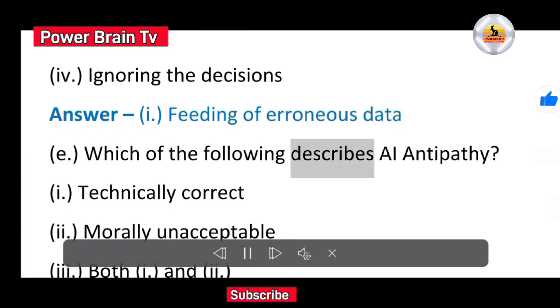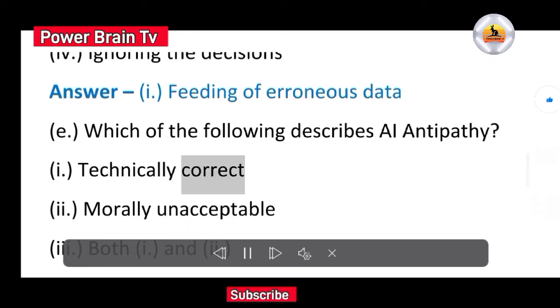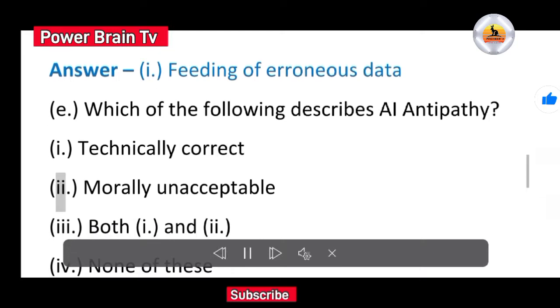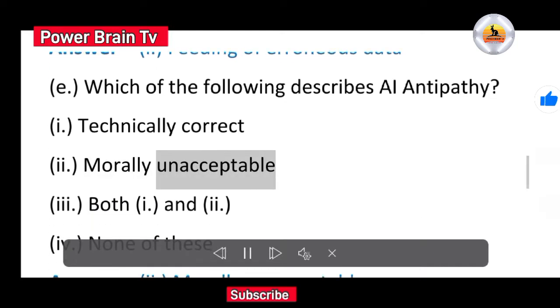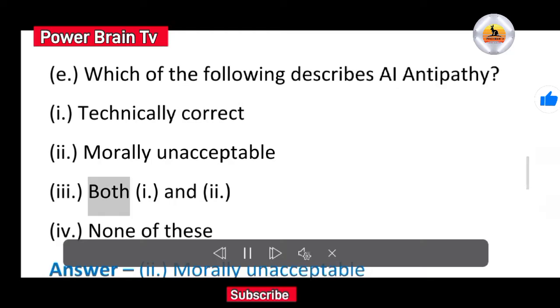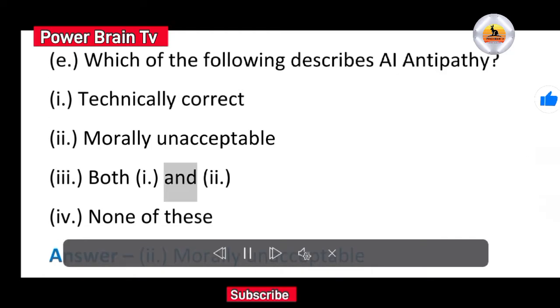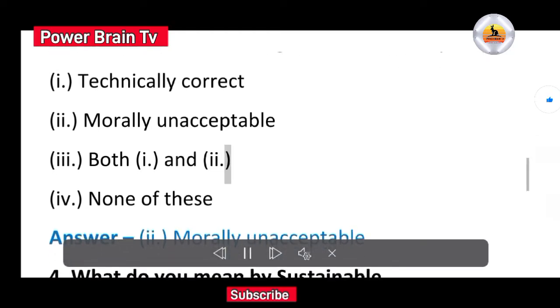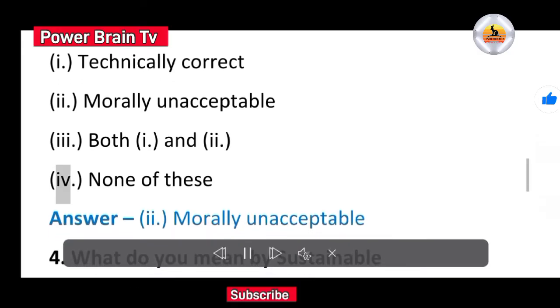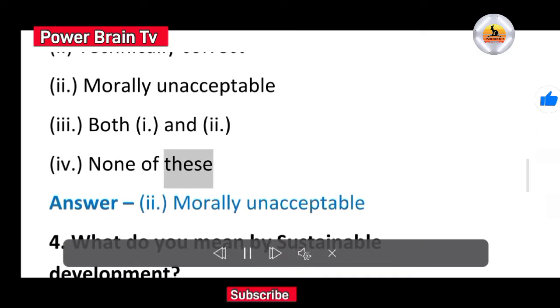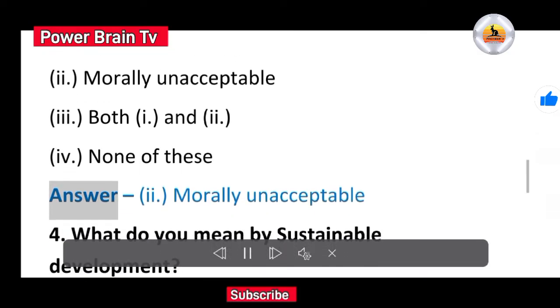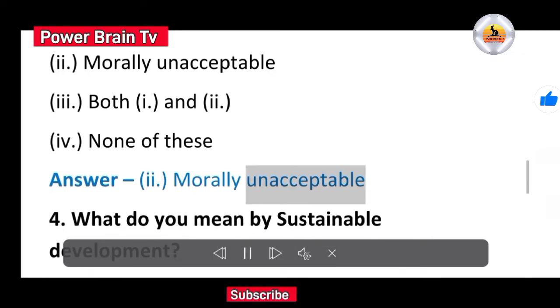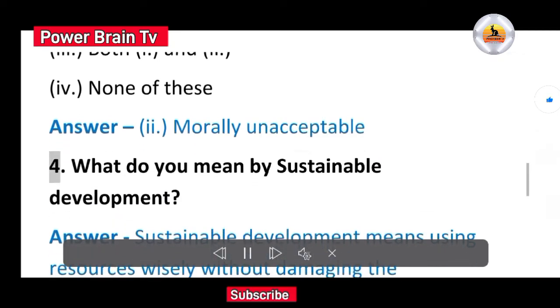E. Which of the following describes AI antipathy? I. Technically correct. II. Morally unacceptable. III. Both I and II. IV. None of these. Answer II. Morally unacceptable.